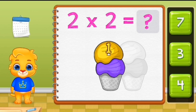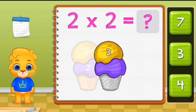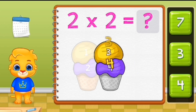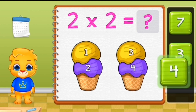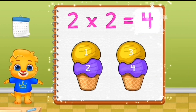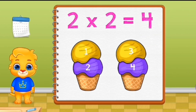One, two, three, four. Four. Four. Two times two equals four.